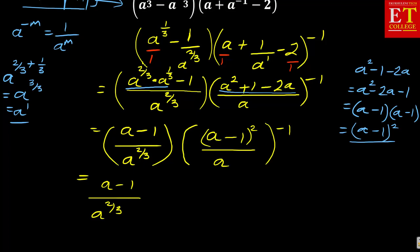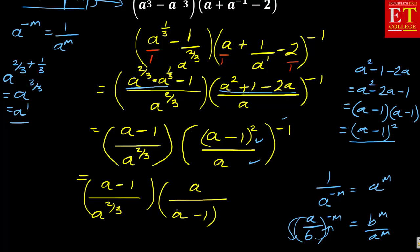If I remind you of one law of exponent, 1 over a to the power negative m is equal to a to the power m, or another law which said a over b to the power negative m becomes b to the power m over a to the power m. The b goes on top and the a goes below. That's the one we're going to use because we have a fraction and a negative.